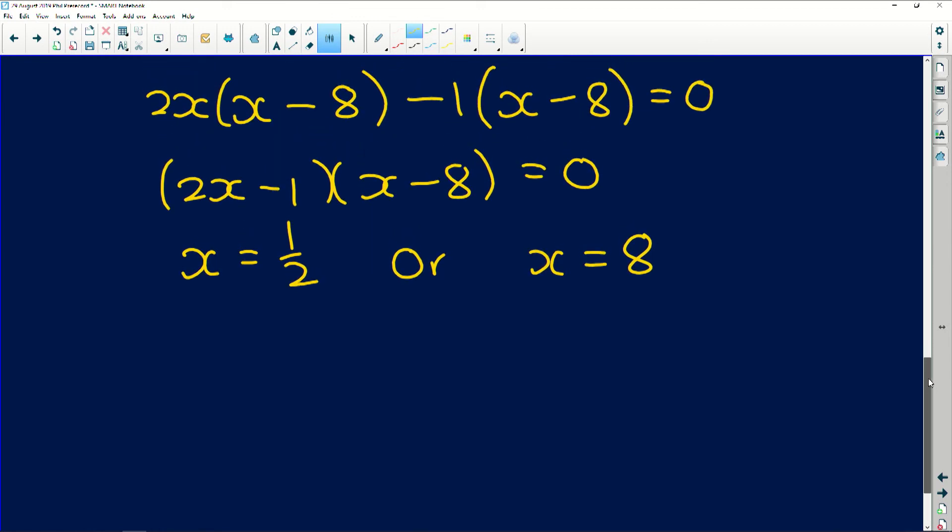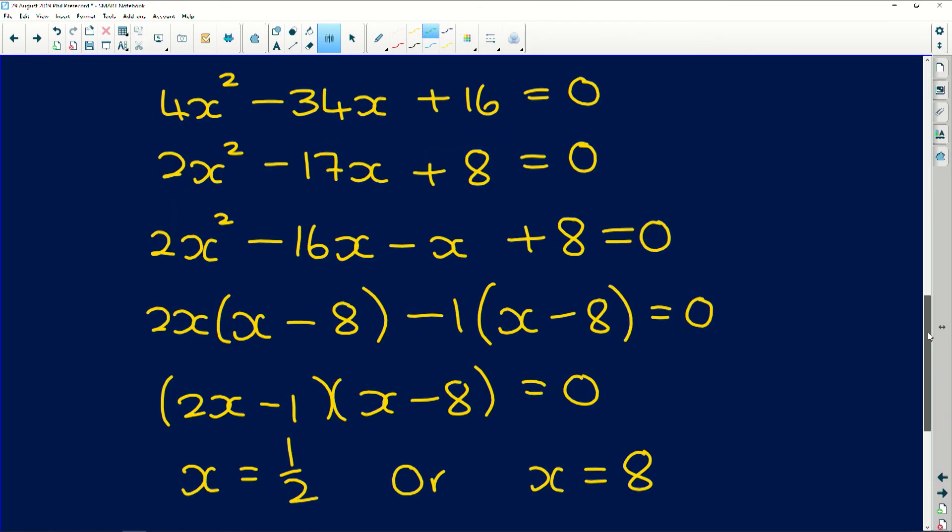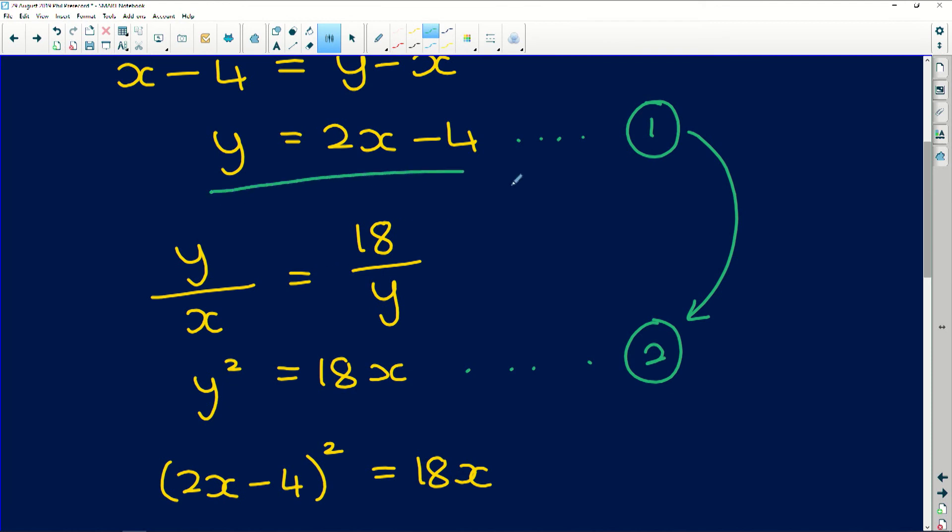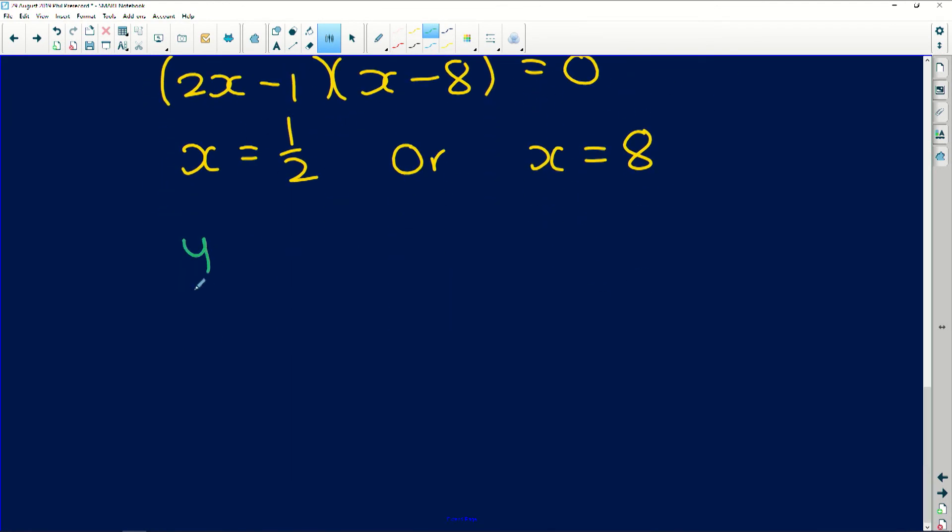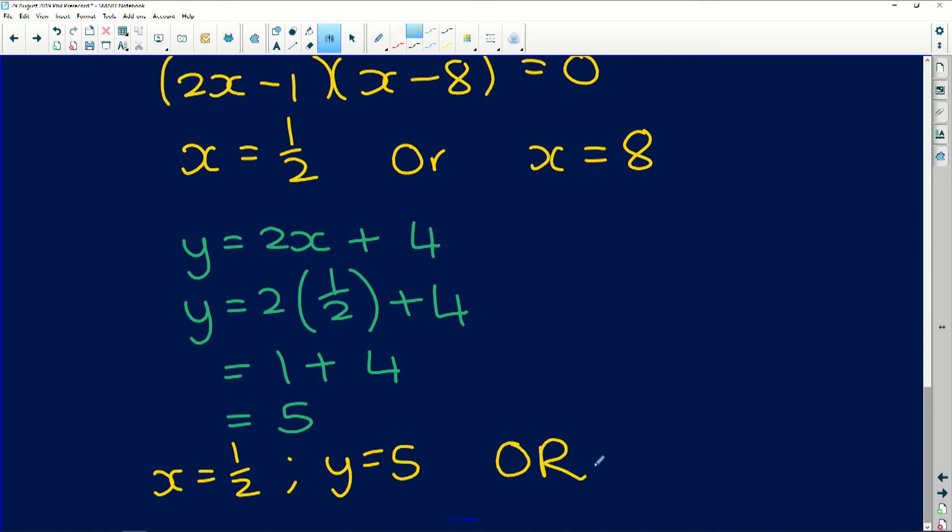Now, to find the y values, we simply substitute these x values into one of our y equations. Now remember, our first equation we had, y is equal to 2x plus 4. So to find the y value that corresponds to x equals a half, we say y is equal to 2 multiplied by a half plus 4, which is the same as saying 1 plus 4, which is 5. So remember, these two are a pair. So x equals a half, y equals 5, or, and now we do the same thing for this situation over here. So y is equal to 2x plus 4. y is equal to 2 multiplied by 8 plus 4, which is the same as 16 plus 4, which gives us 20.